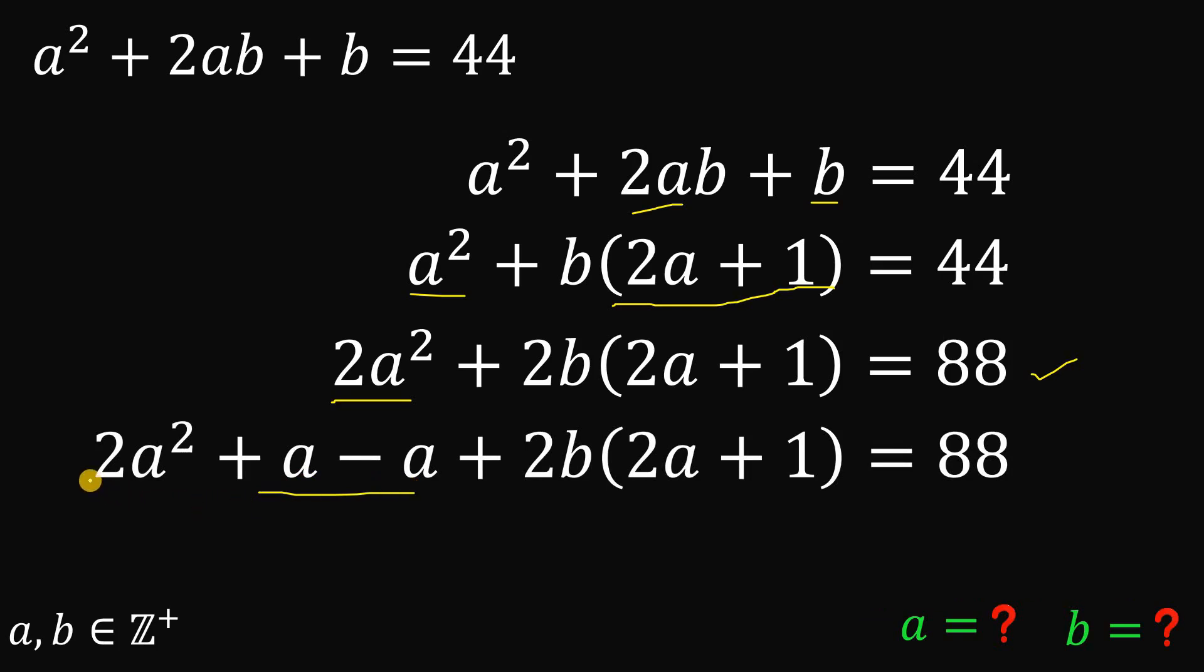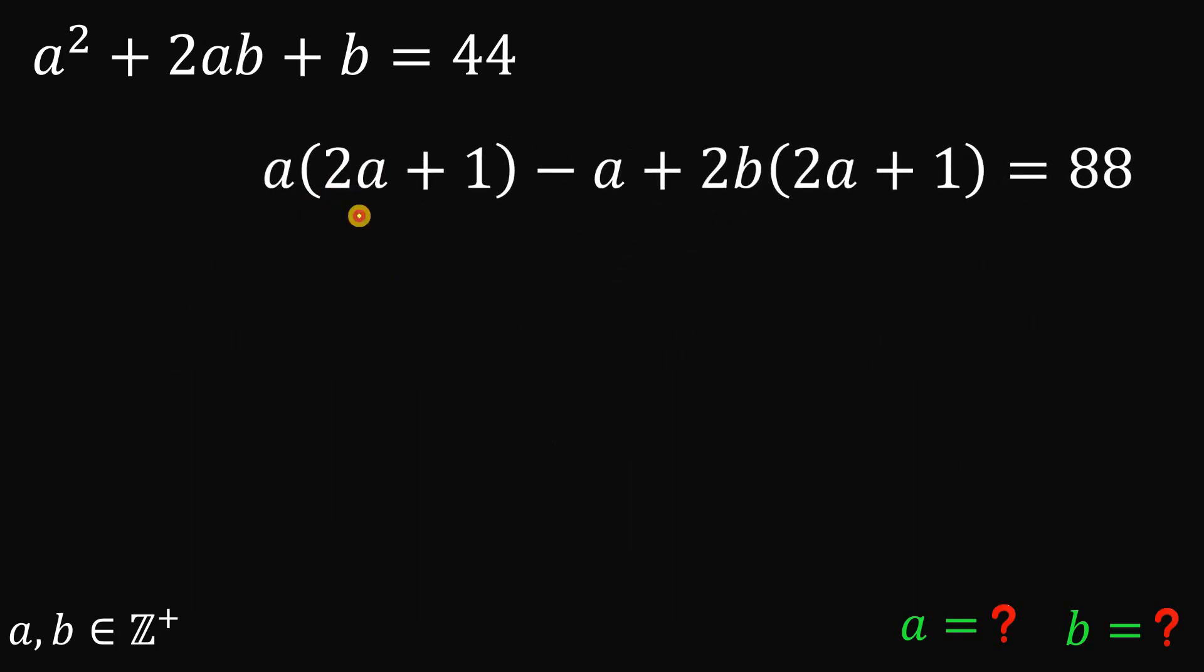And from here, focusing on these two terms, we can now factor out a. So we have a multiplied by 2a plus 1, then bring down negative a to b multiplied by 2a plus 1 equals 88. Now let's focus on this result. Now as you can see, we have two terms having a factor of 2a plus 1. So the only problem is this negative a. So let's rearrange some terms a little bit.